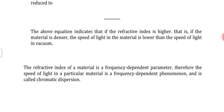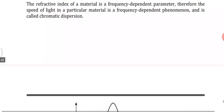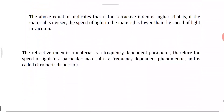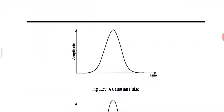In order to minimize material dispersion, it can be reduced either by choosing sources with a very narrow spectral output width or by operating at a longer wavelength. This figure shows a Gaussian pulse traveling through a fiber.